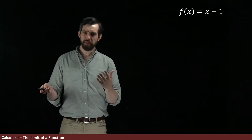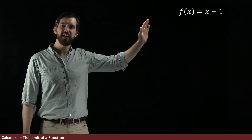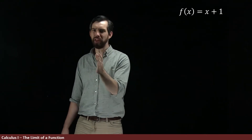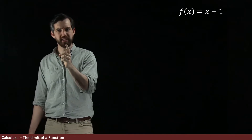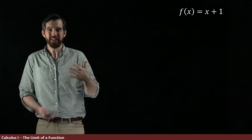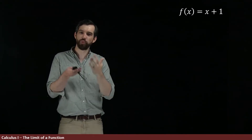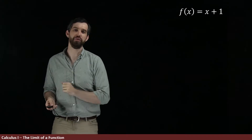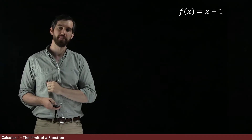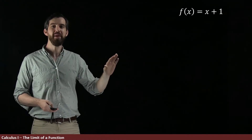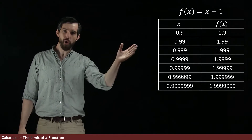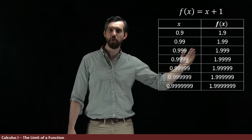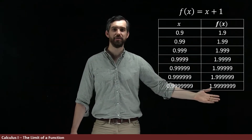We looked at this graphically, but now I want to study this f of x numerically. We know that 1 is the interesting spot, so let's study what happens as we get really, really, really close to the value of x equal to 1. I'm going to make a table of values here — a whole bunch of different x values, and then I've plotted out what the f of x values are.